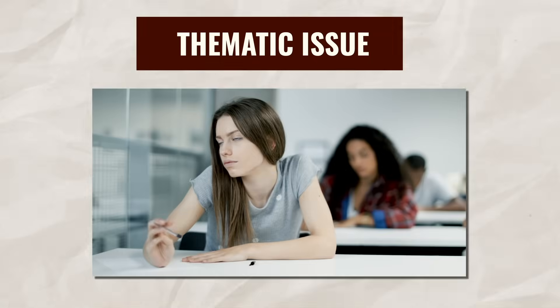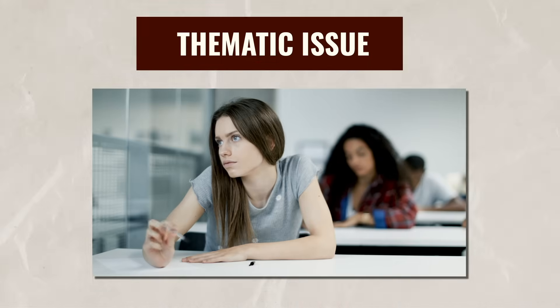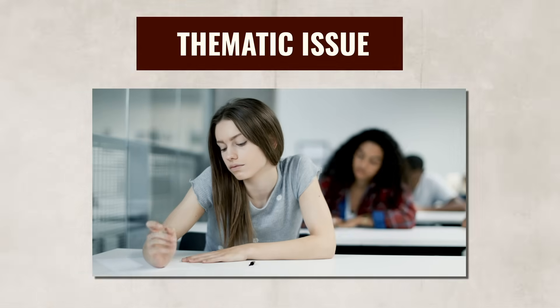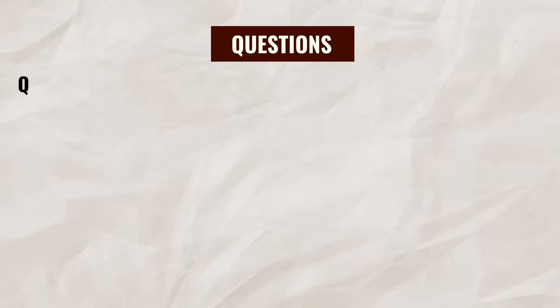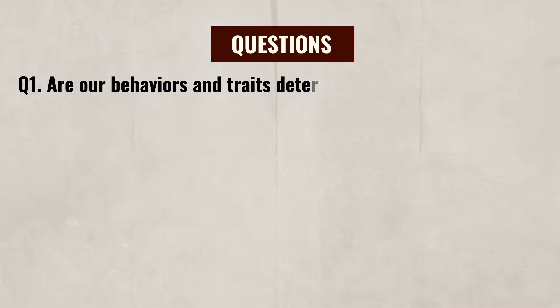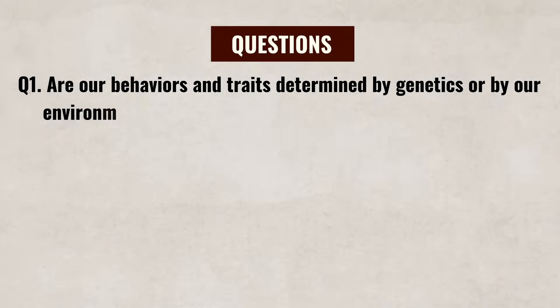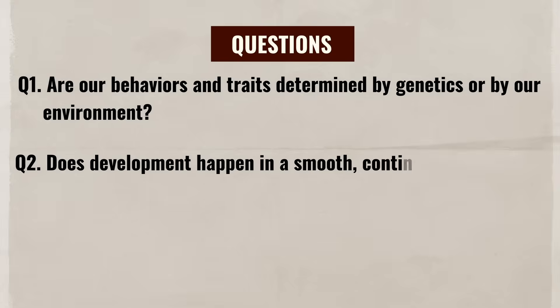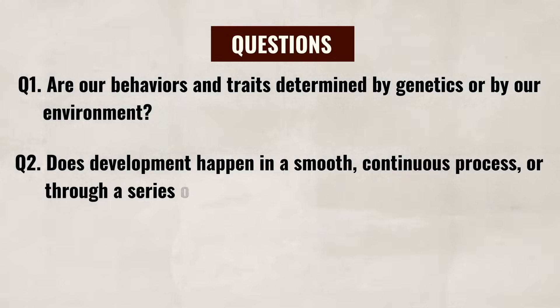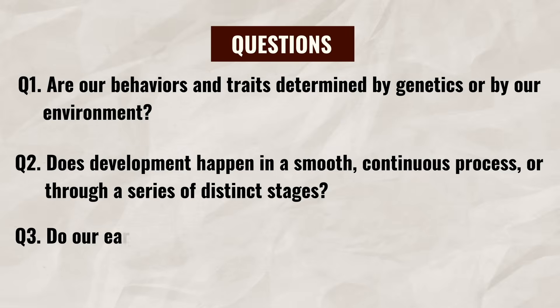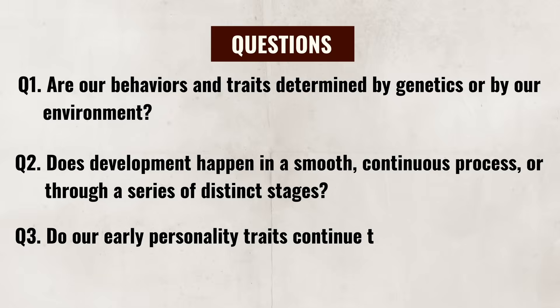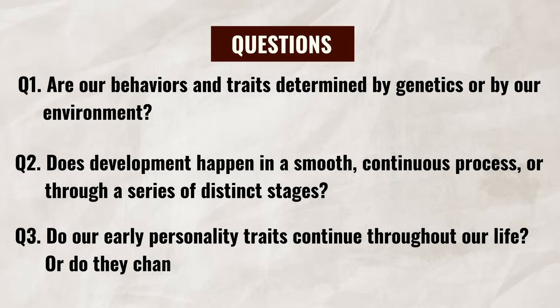Thematic issues, on the other hand, focus on specific themes and topics that span across a person's life. These different themes focus on different questions or issues that persist in an individual's life, instead of the particular age of the individual. Questions such as: are our behaviors and traits determined by our genetics or by our environment? Does development happen in a smooth, continuous process or through a series of distinct stages? Or do our early personality traits continue throughout our life, or do they change as we grow?